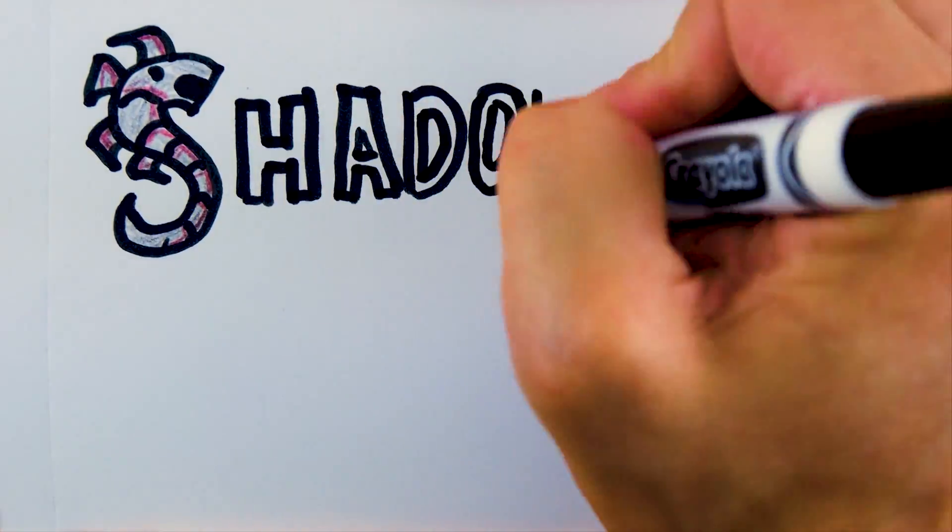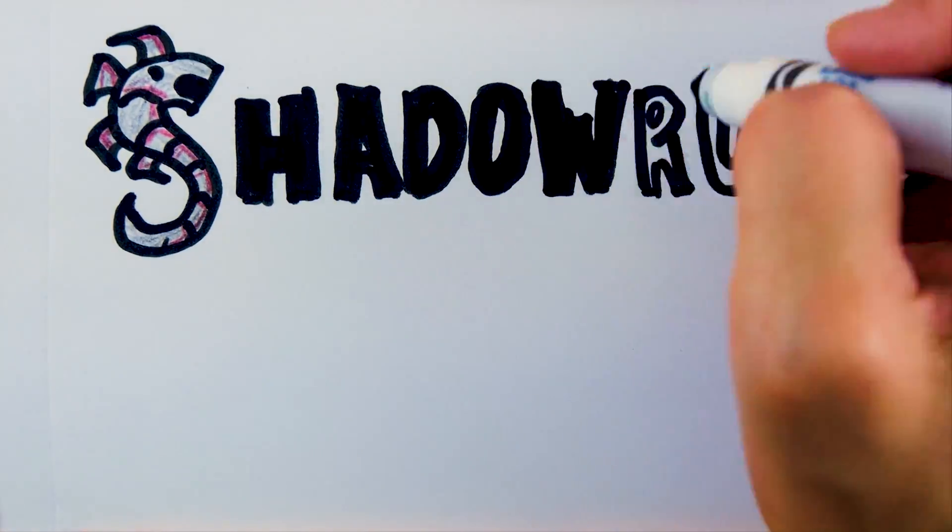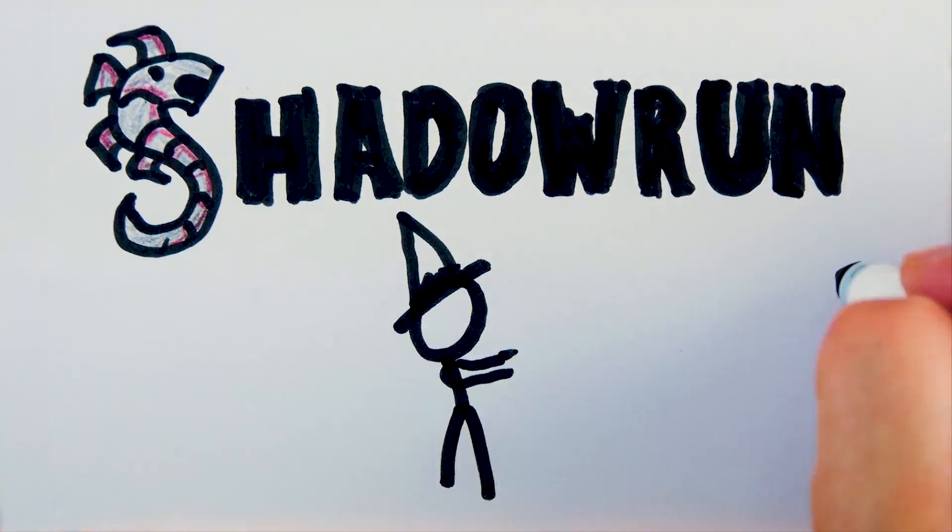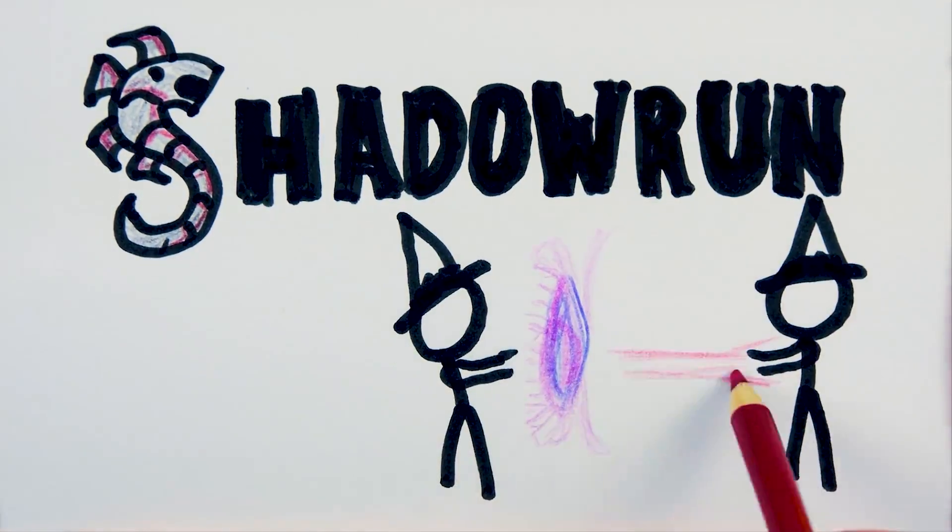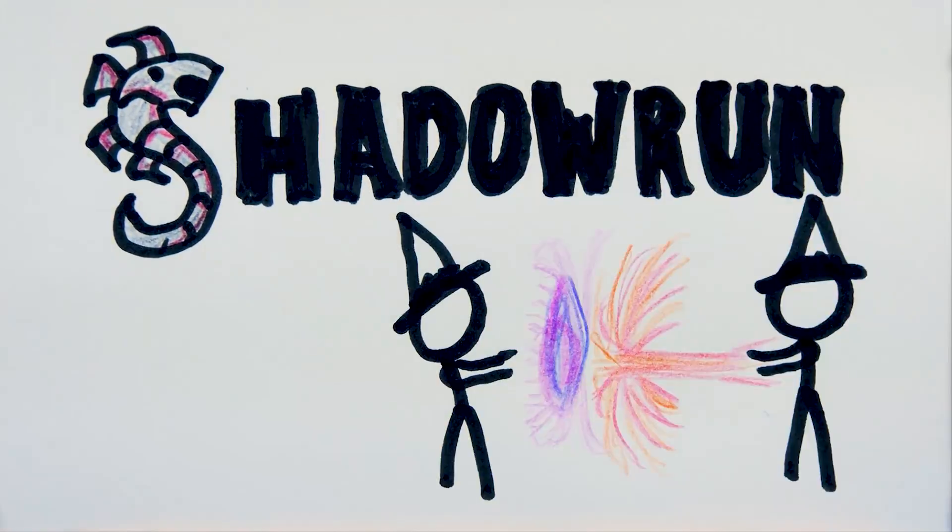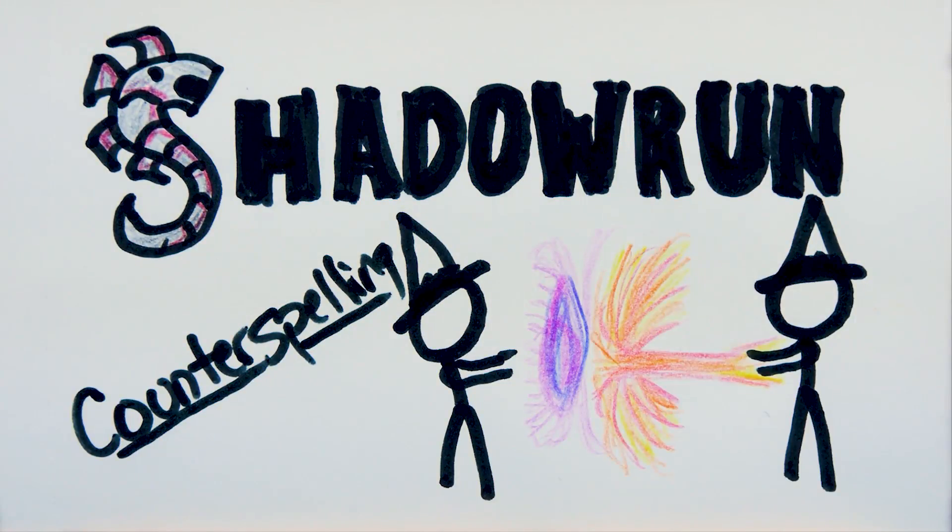In Shadowrun 5th edition, magic comes in all shapes and sizes. When your team encounters enemy magicians flinging mana at them, it's your job to protect their minds and bodies. To stop your Street Sam from falling under the influence of a mind mage, you'll want to know the rules for counterspelling.